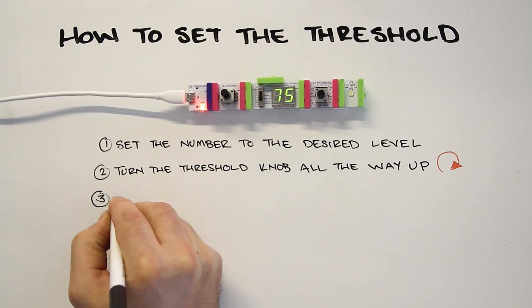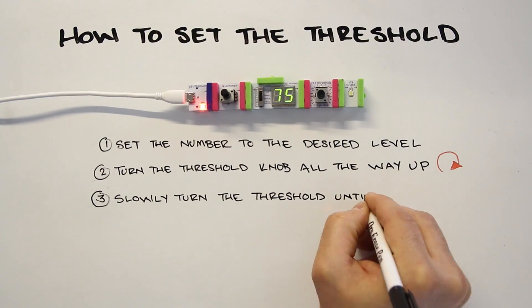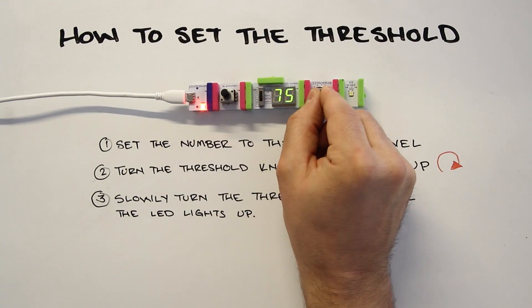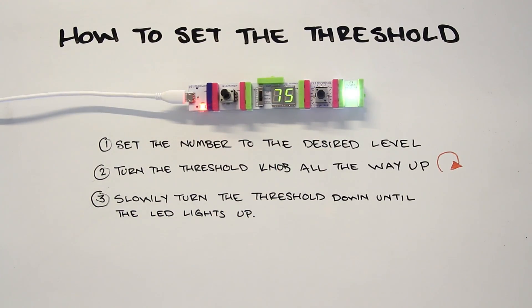Next, slowly turn the threshold down until the LED lights up. Now your threshold is set and ready to use.